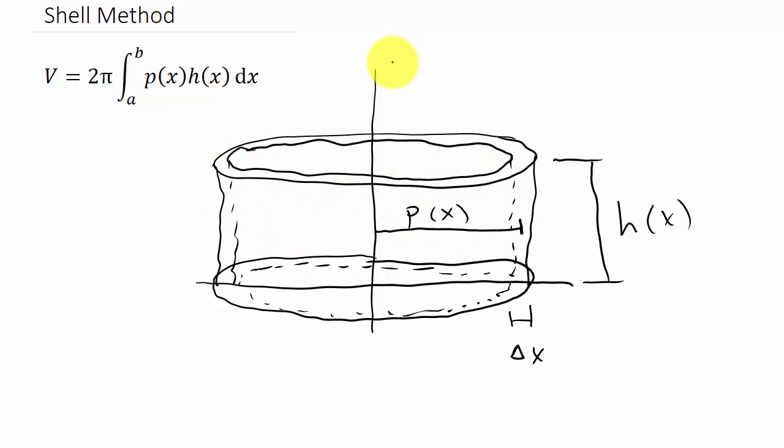So p(x) is the radius - that's the distance from the axis that you're revolving it around to the shell. When we draw a rectangle, that's the radius from the axis to that rectangle or the edge of the shell.